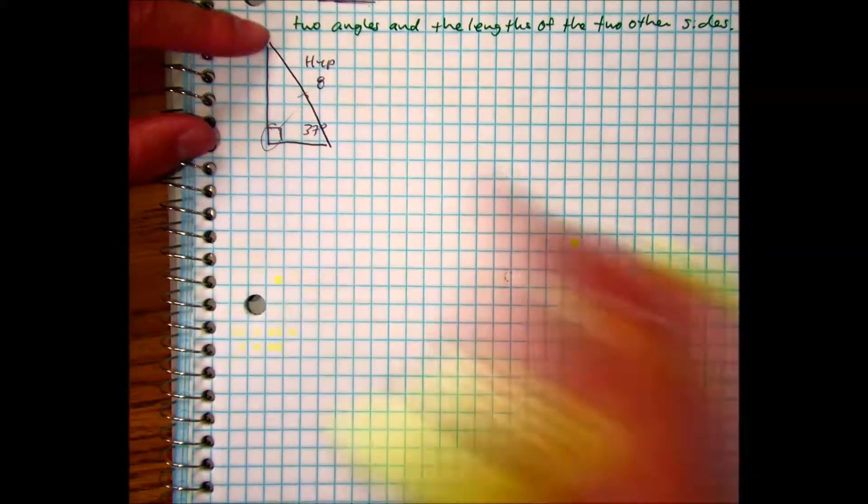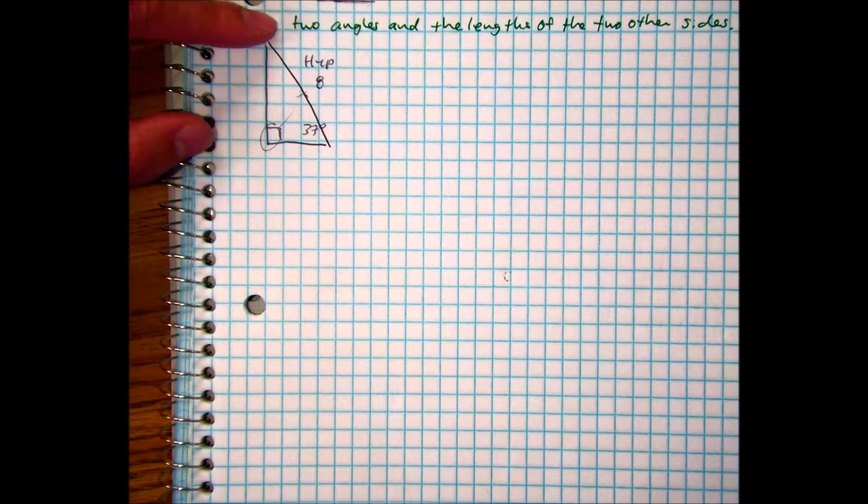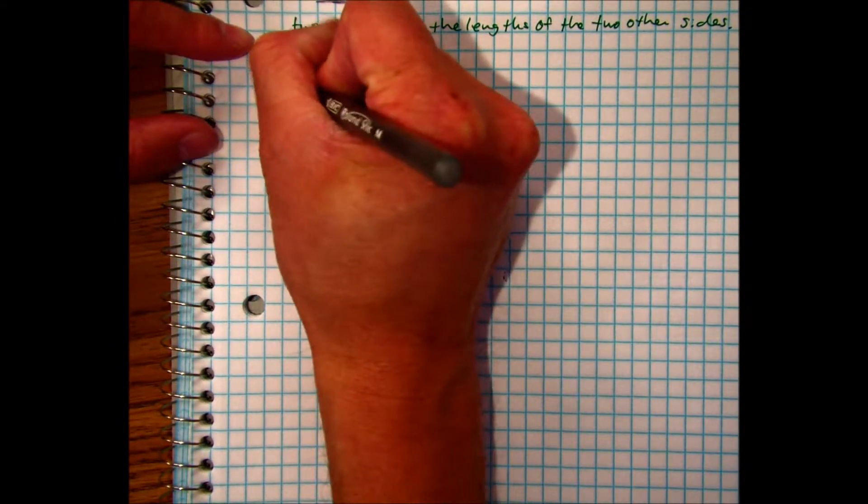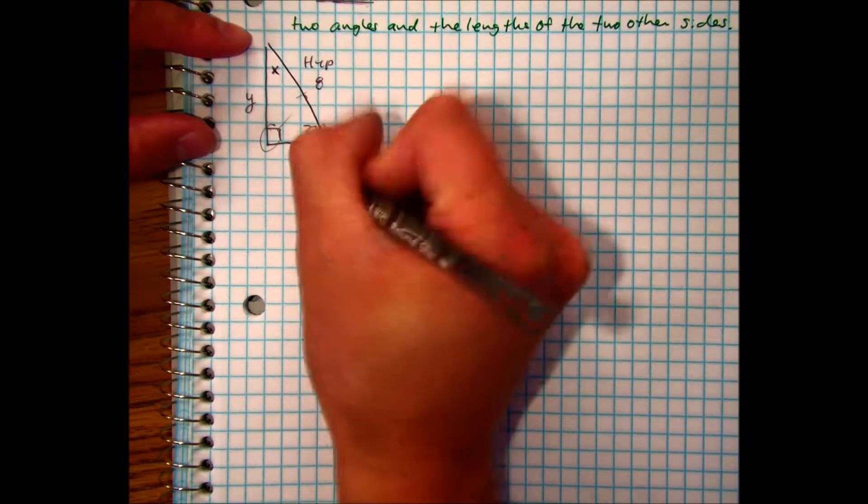Find the measures of the other angles and side lengths. I'll call the other angle x, I'll call this side y and this one z.